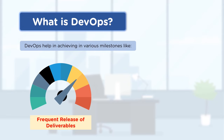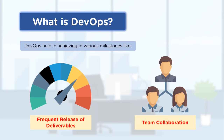DevOps helps us to achieve a lot of milestones. The first one is frequent release of deliveries. Prior to DevOps, people were doing releases every quarter — every three or four months. But with DevOps, the frequency of releases increased a lot. Some organizations are now doing releases every month or even twice a month.